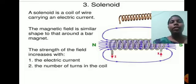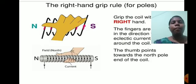Next, solenoid. A solenoid is a coil of wire carrying an electric current. The magnetic field is similar in shape to that around a bar magnet. The strength of the field increases with the electric current and the number of turns in the coil.